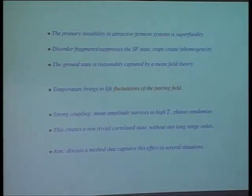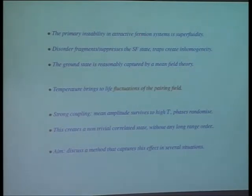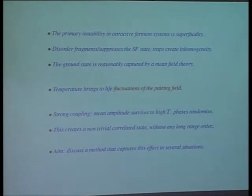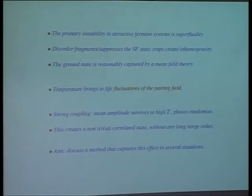In particular, at strong coupling, one discovers — and this is quite well-known — that the mean amplitude of this pairing field survives to high temperature, but the phases of these pairing fields randomize, leading to a non-trivial correlated state. This is like the sort of paramagnetic Mott state in the repulsive Hubbard model, where you find gaps or pseudo-gaps and no long-range underlying order. The attempt is to understand these kinds of situations.